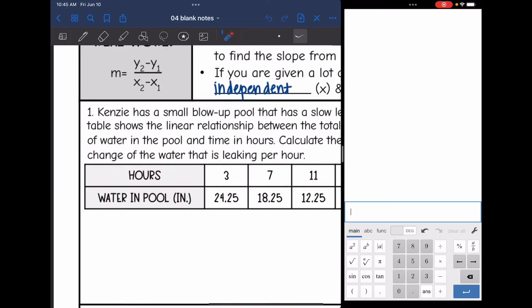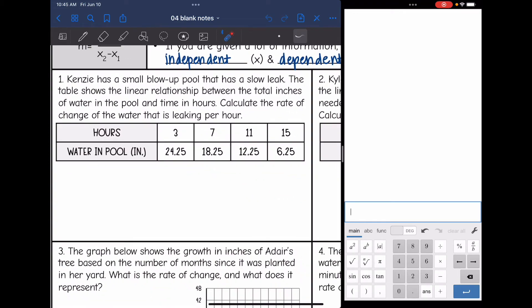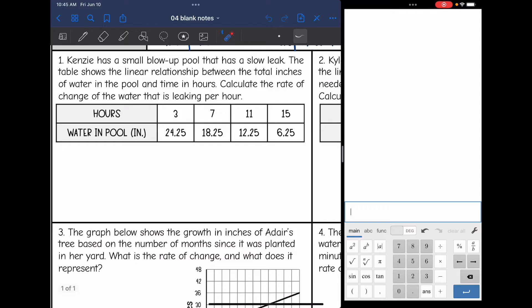Let's look at this first one. It says, Kenzie has a small blow up pool that has a slow leak. The table shows the linear relationship between the total inches of water in the pool and time in hours. Calculate the rate of change of the water that is leaking per hour. So it says rate of change. That's how I know I'm going to find slope. And they gave us a table, so we're going to use slope formula.